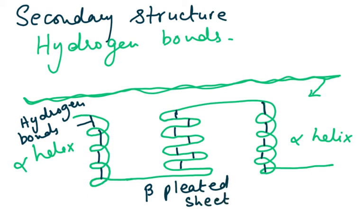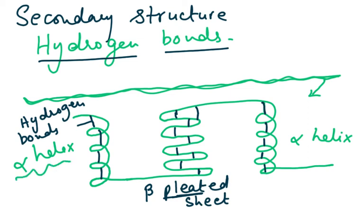The word 'pleat' is used in stitching — like pleats in a saree or trousers — to help visualise the folding. So the secondary structure is held together by hydrogen bonds, and the two main forms are the alpha helix and the beta pleated sheet.